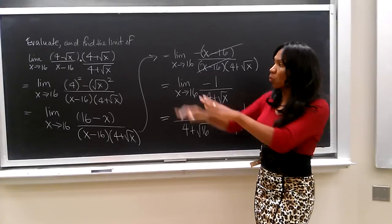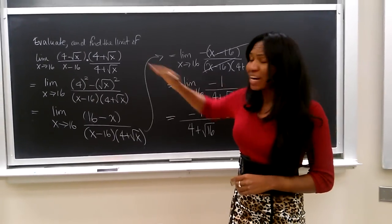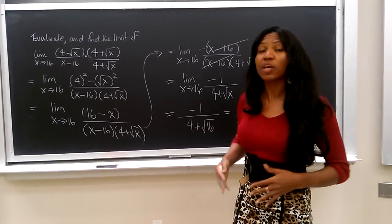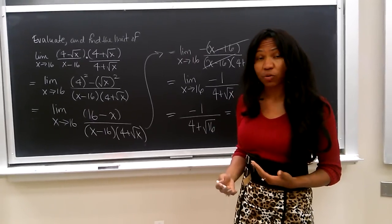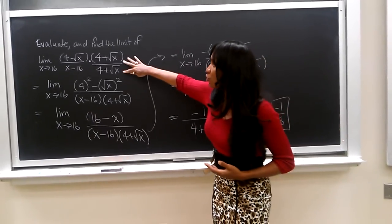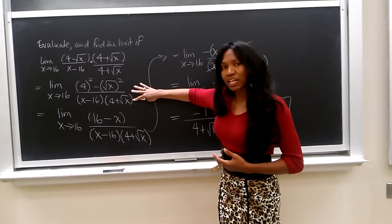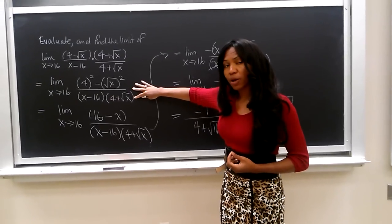So, again, what we want to do is first try to see if we can substitute our value in. If we have a denominator that's zero, we want to manipulate the expression. In this case, we multiply both the numerator and denominator by the conjugate.